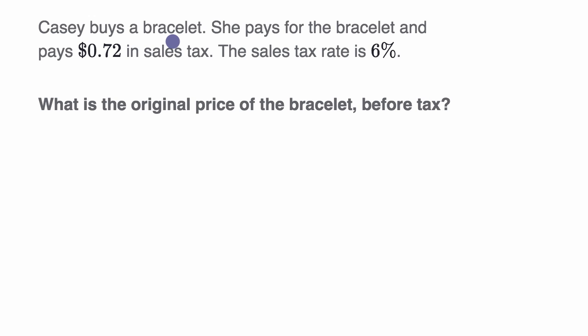We're told that Casey buys a bracelet. She pays for the bracelet and pays 72 cents in sales tax. The sales tax rate is 6%. What is the original price of the bracelet before tax? Pause this video and see if you can figure this out.